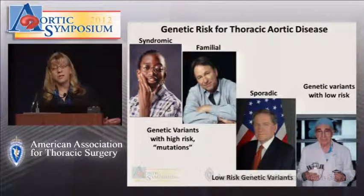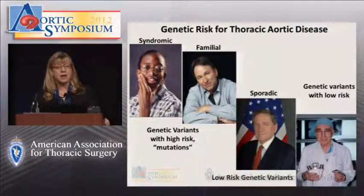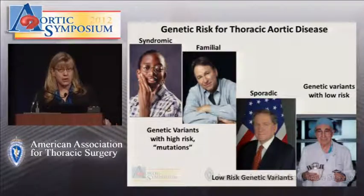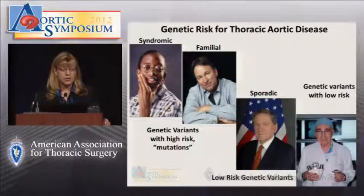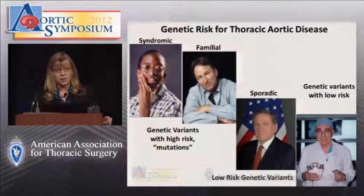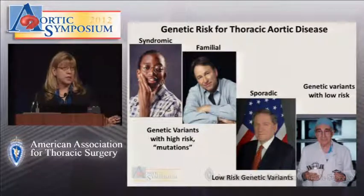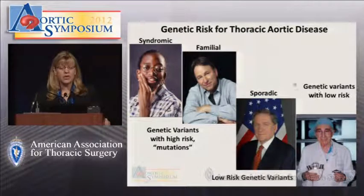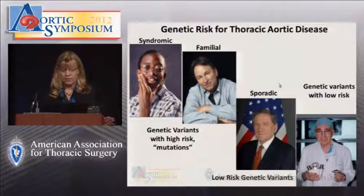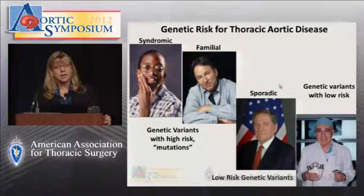John Ritter is an example of that. He presented with a dissection. After he presented, we imaged his brother, who was found to have an aneurysm and underwent repair. It turns out that Tex Ritter, his father, died suddenly and may have also died of an acute aortic dissection.